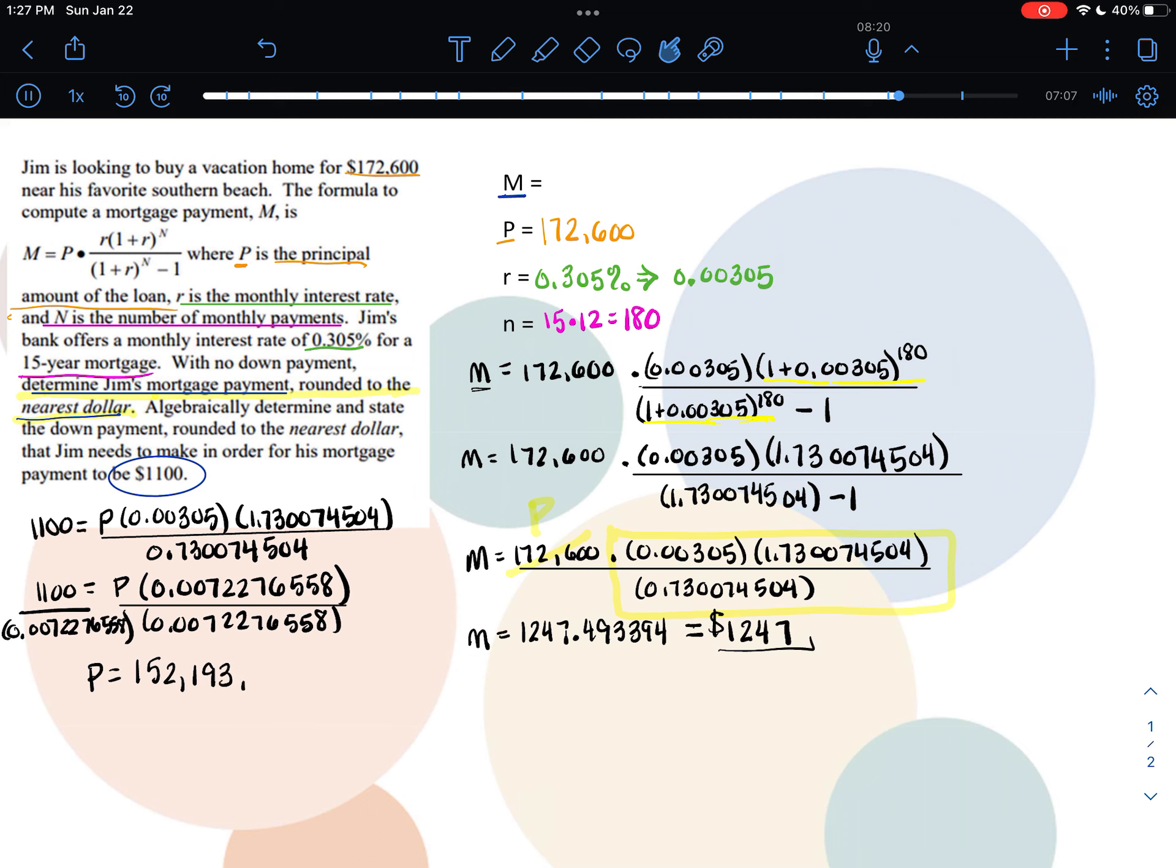This is representing the principal amount of the loan that he would need to have an $1,100 payment. However, I'm going to need to subtract that from the actual cost of the house to find out how much his down payment is going to be, because that's what the second part of the question is asking me. What is the down payment going to need? So I'm going to take my original cost of the house and I'm going to subtract my $152,193 from it.